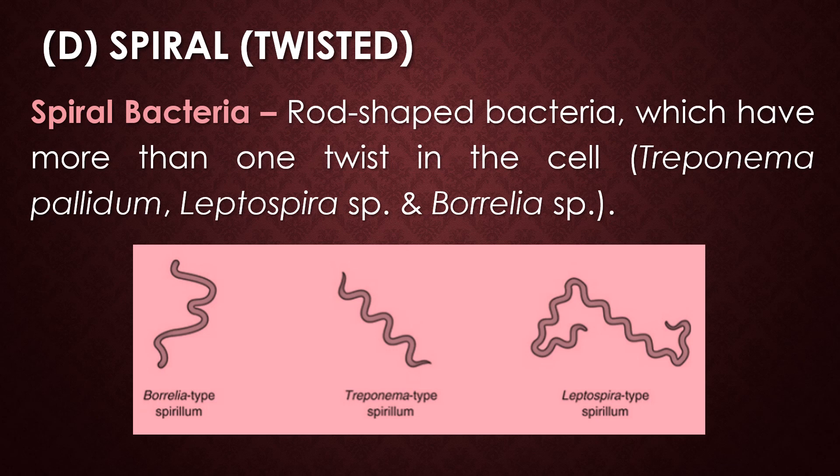The next type is spiral shaped or twisted shaped bacteria — rod shaped bacteria which have more than one twist in the cell. Well-known examples of spiral shaped bacteria are spirochetes, which are well known for sexually transmitted diseases. The bacteria include Treponema pallidum, Leptospira species, and Borrelia species.